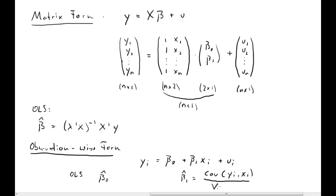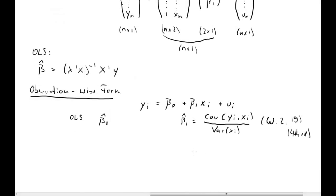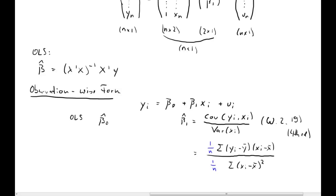How do we estimate these beta hats? Beta-1-hat is covariance divided by variance, and you should remember how the covariance and variance are calculated. The factor 1/n nicely cancels out. And beta-naught-hat is estimated as y-bar minus beta-1-hat times x-bar.